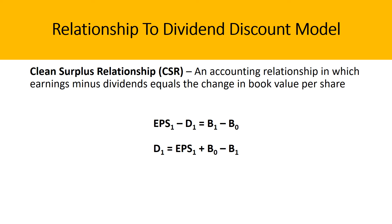This is really important: once you learn the RIM model, the next section covers its relationship with the dividend discount model. Before we discuss that, it's important to define what the clean surplus relationship means. It is an accounting relationship in which earnings minus dividends equals the change in book value per share. So: EPS minus dividends in period 1 equals the change between book value in period 1 and book value in the base year. Isolating for the dividend in period 1, we get: dividends = EPS in period 1 plus book value in the base year minus book value in period 1. That is our fundamental clean surplus relationship.